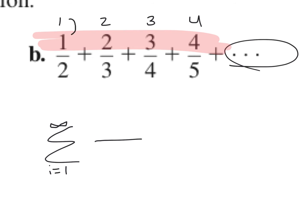What are we doing to go from term 1 to the numerator 1? Nothing changes — so the numerator is just i. When i equals 1, we have 1 on top; when i equals 2, we have 2 on top; when i equals 3, we have 3 on top. So we put i on top. Now let's look at the denominators. What do we do to go from 1 to 2? Add 1. From 2 to 3? Add 1. From 3 to 4? Add 1. It works for all of them.